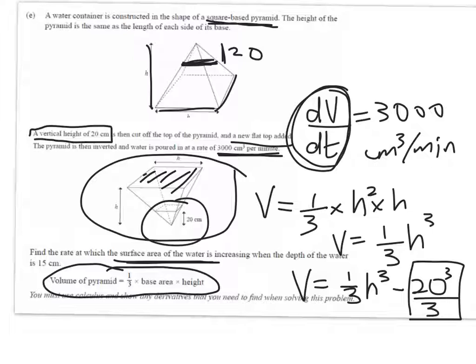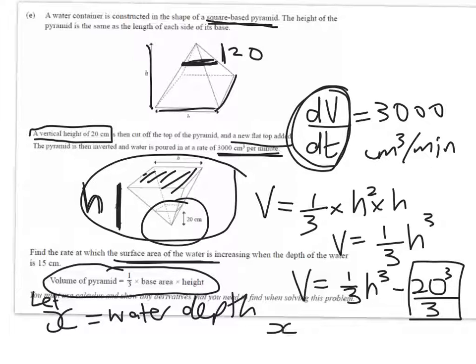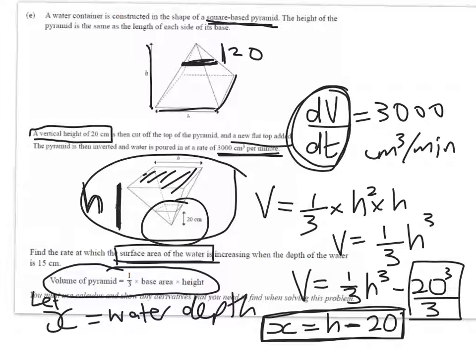Let's now start thinking about what the depth of the water is. If my whole height is h, I'm going to have a new variable that I'm going to call x. So let x equal water depth. And x is just going to be the height of the whole thing, before it got any chopping off done, take away 20. Why do I want to have that water depth as a different variable? Because I'm looking at the rate at which the surface area is increasing.